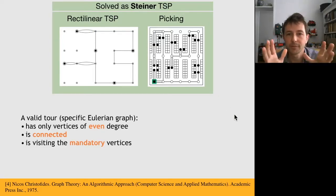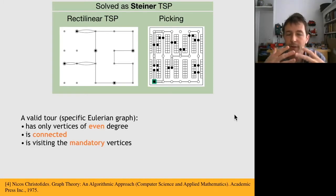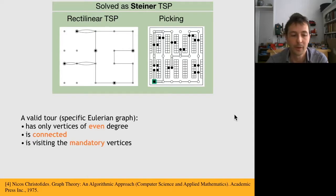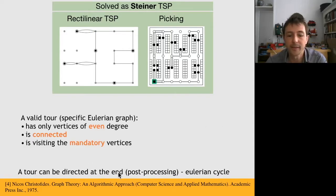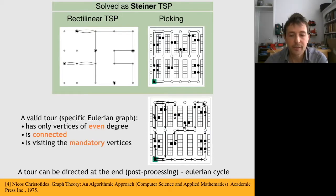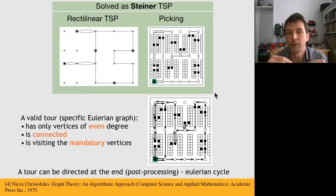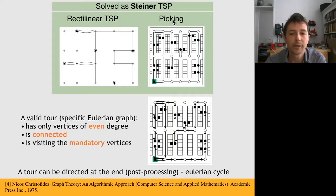We must keep this property in mind because I will refer to it during this talk very often to justify the algorithm. A second point is that a tour can be directed at the end as a post-processing. If you are given an undirected tour, you can easily give it a direction at the end to really see the trip of the picker in the warehouse. This is why the algorithm only considers undirected tours.